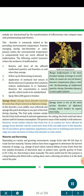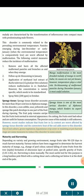Spongy Tissue: This disorder accounts for more than 30% loss in Alphonso mango. A non-edible, sour, yellowish and sponge-like patch develops in one part of the fruit during ripening. The fruit pulp remains unripe but fruits look normal externally. On cutting, the fruits emit bad odor and are unfit for human consumption. The precise cause is still unknown; however, recent studies indicate that fruits low in calcium content are worst affected and convective heat of the soil adds to this disorder. Use of sod culture, green vegetation, leguminous crop cover or mulching at pre-harvest stage are some measures to reduce this disorder.